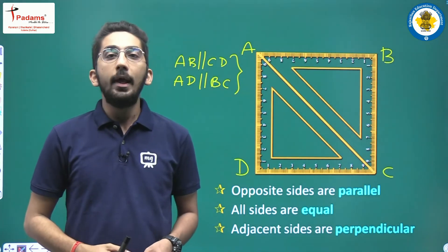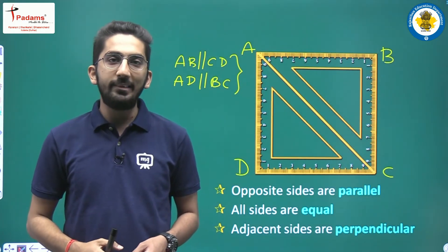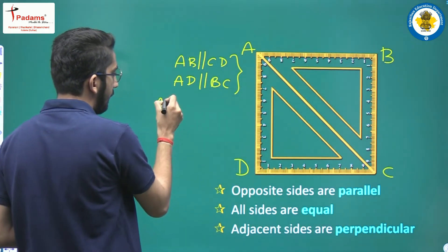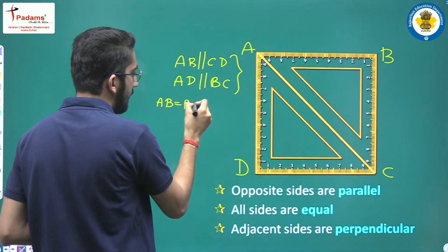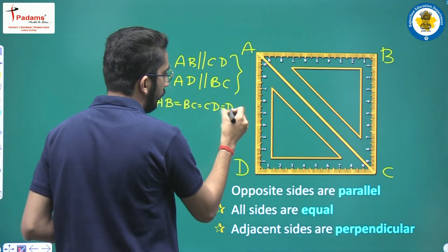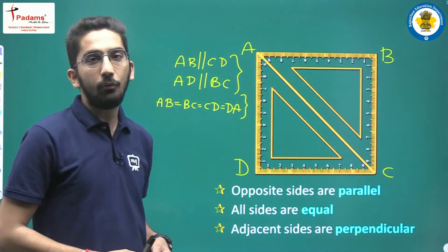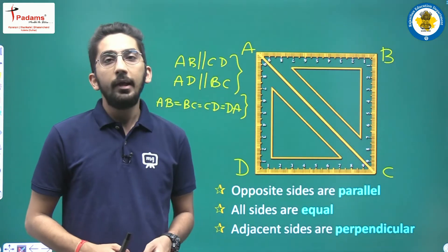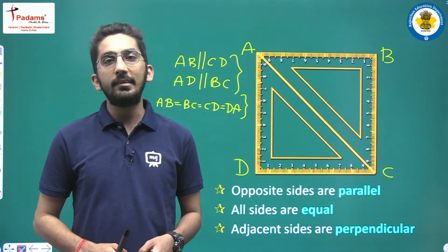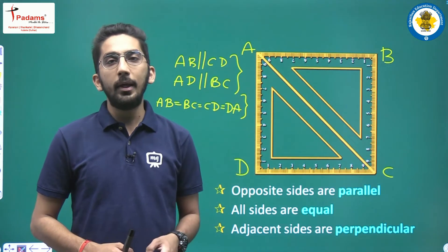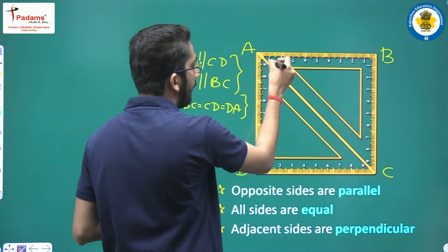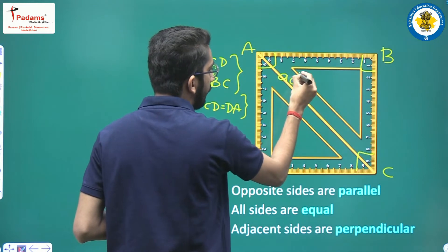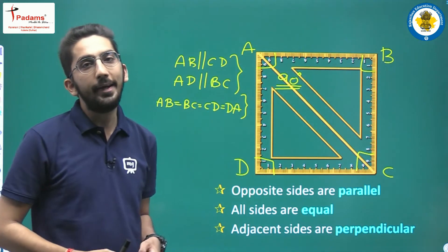Next, all sides are equal. Unlike a rectangle where only opposite sides are equal, in a square all sides are equal: AB equals BC equals CD equals DA. Adjacent sides are also perpendicular, similar to a rectangle, so all four angles — angle A, angle B, angle C, and angle D — are all equal to 90 degrees and are right angles.